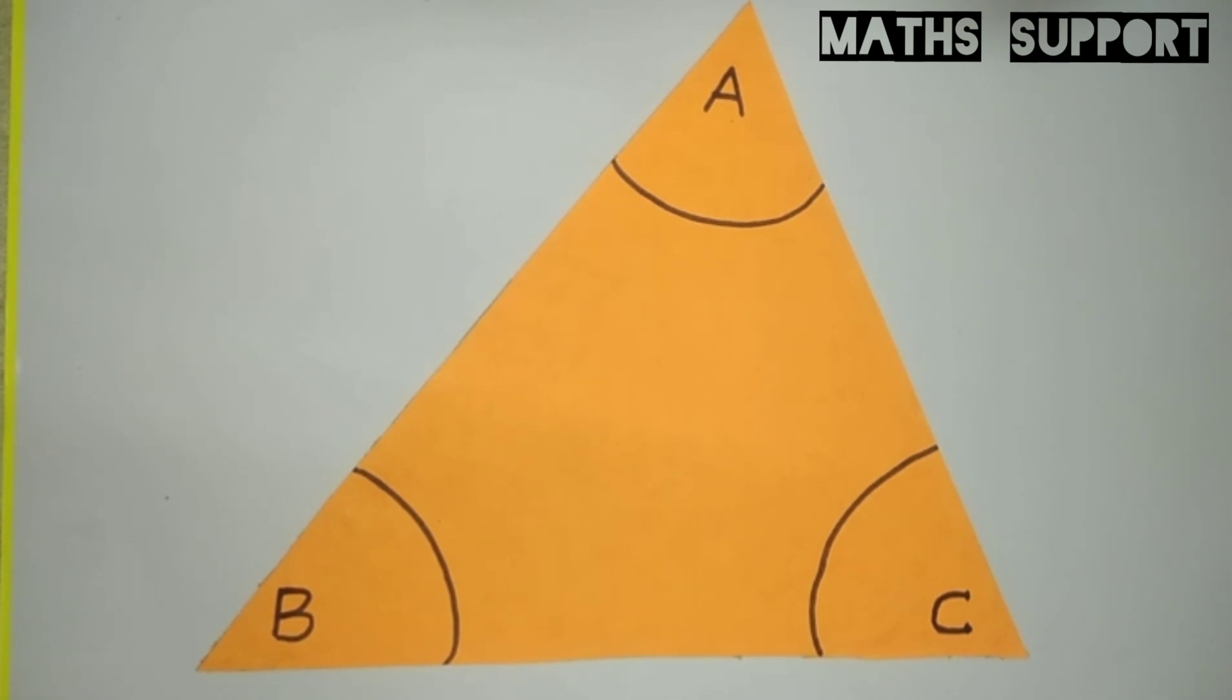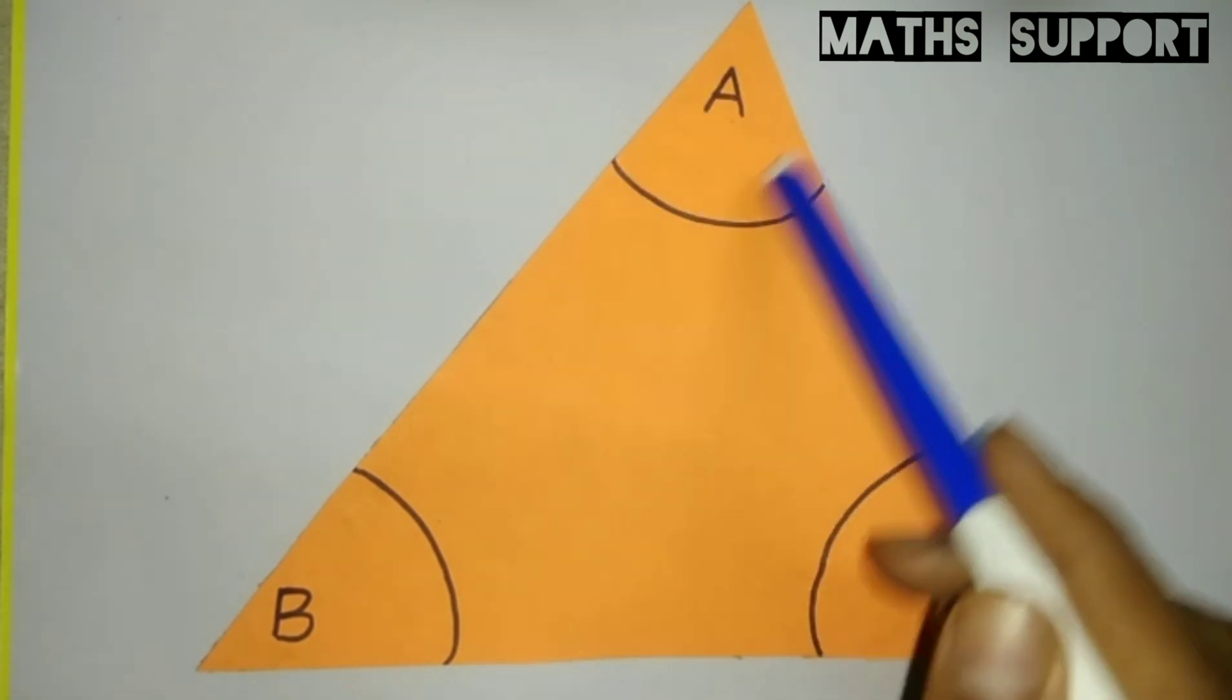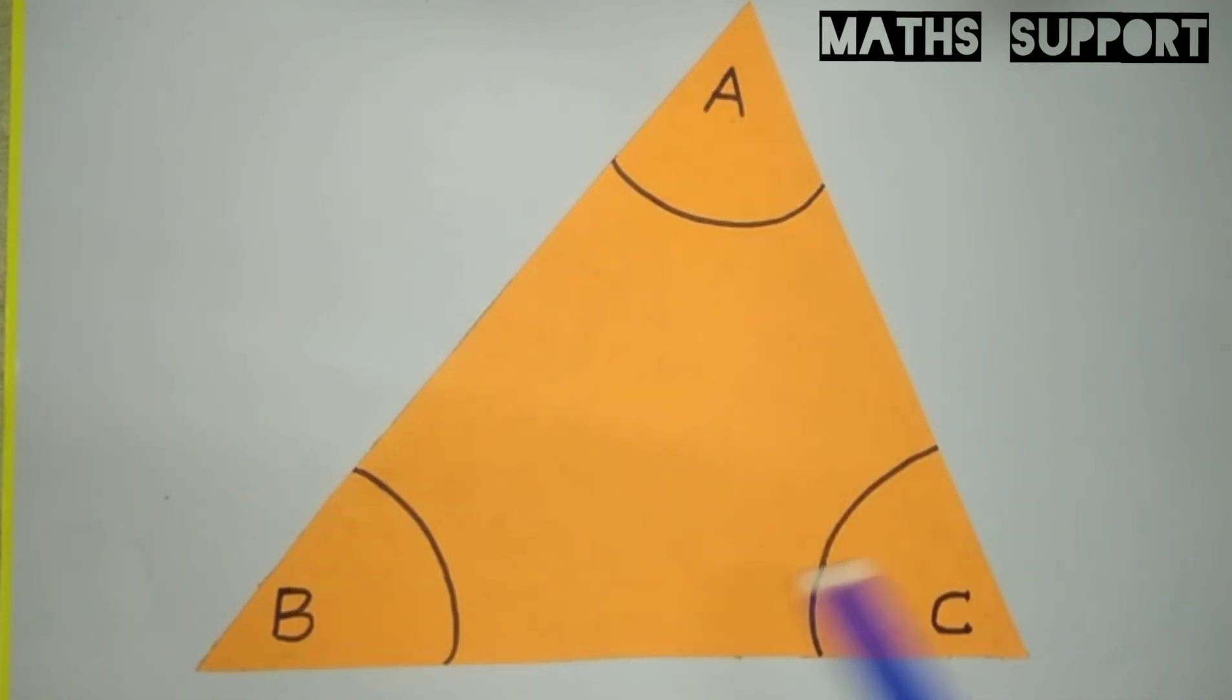If we are thinking this practically, that means, if I am separating this angle A, B and C and combine them, then it should create a straight line because the sum of angles is 180. So let's start separating these angles.